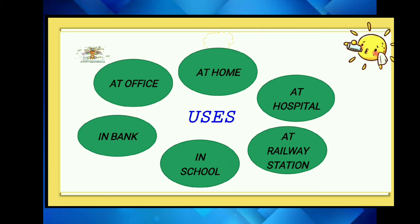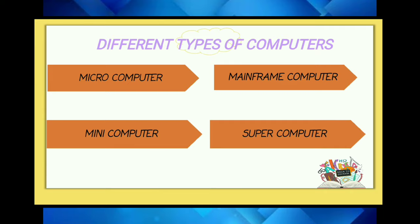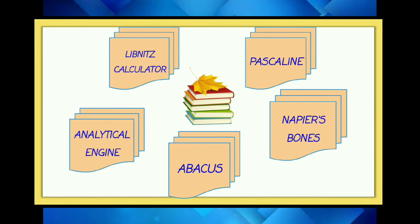Now you have learned about the classification of computers. There are different types of computers: first is micro computer, then mainframe computer, mini computer, and super computer. Basically, a computer is designed for doing calculations.